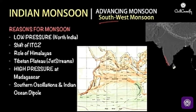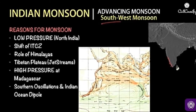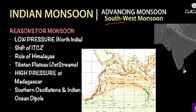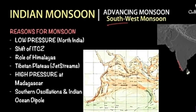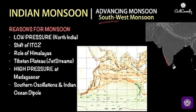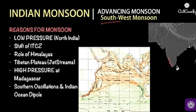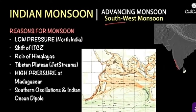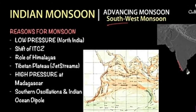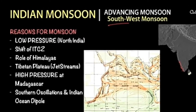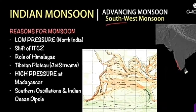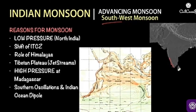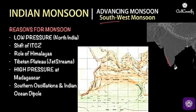The first reason is the differential heating and cooling of land and water. Second, the shift in the position of the ITCZ. Third, the presence of a high pressure area east of Madagascar. Fourth, the Tibetan plateau gets intensely heated. And fifth, the movement of the westerly jet streams to the north of the Himalayas and the presence of tropical easterly jet streams over the Indian peninsula.